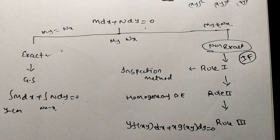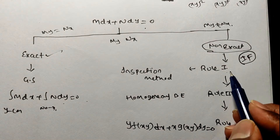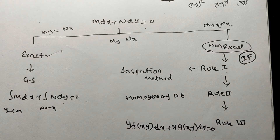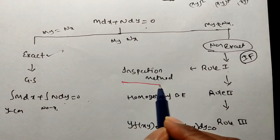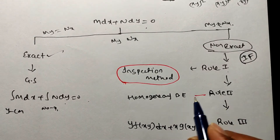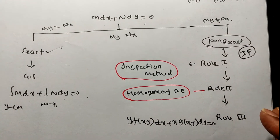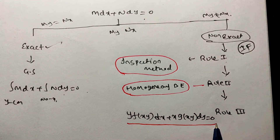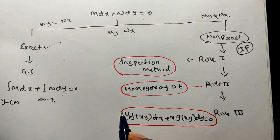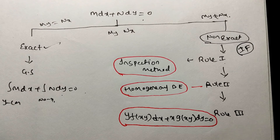Integrating factors may be more than one — possibly infinitely many. To find the integrating factor: Rule 1 is the inspection method, Rule 2 applies to homogeneous differential equations, and Rule 3 is the current method — when the equation is non-exact and is in the form y·f(xy) dx + x·g(xy) dy = 0.